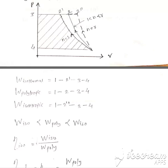It means we can conclude that the compressor requires minimum work when the process is isothermal. The work done for the isothermal process is represented by the area under curve 1-2-3-4. Work done for the polytropic process is represented by the area under curve 1-2-3-4. The work done for the isentropic process is similarly represented by the area under its curve 1-2-3-4. From the diagram, the area under the curve is minimum for the isothermal process. Therefore, work done for isothermal is less than polytropic, and work done for polytropic is less than isentropic.